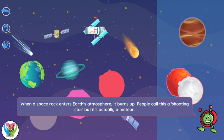When a space rock enters Earth's atmosphere, it burns up. People call this a shooting star, but it's actually a meteor.